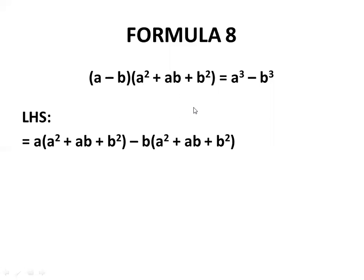A outside and then the second bracket, minus b outside and then multiply with the second bracket. This a has to be multiplied by all three terms, just like we have done before. So this is the product. Minus b has to be multiplied by this whole bracket. So this is the product, changing all the signs.